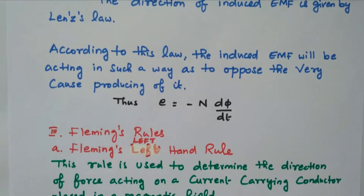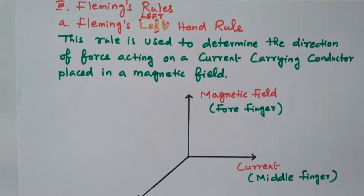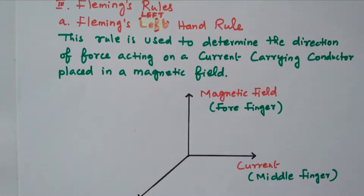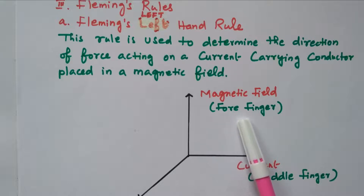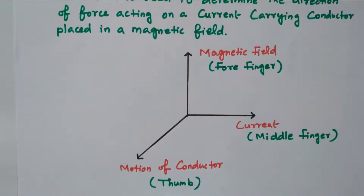Now we will go to Fleming's rules. There are two rules: Fleming's left-hand rule and Fleming's right-hand rule. For the Fleming left-hand rule, in the left hand we stretch the forefinger, middle finger, and thumb perpendicular to each other. The forefinger indicates the magnetic field, the middle finger indicates the current, and the thumb indicates the motion of the conductor.